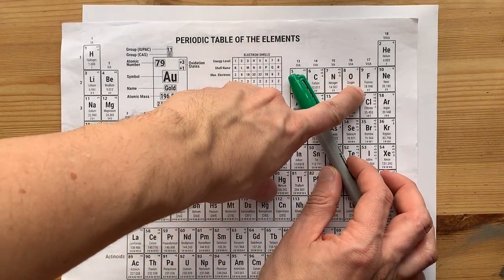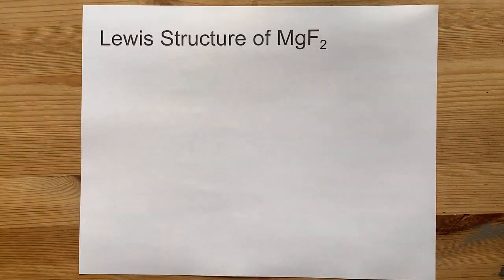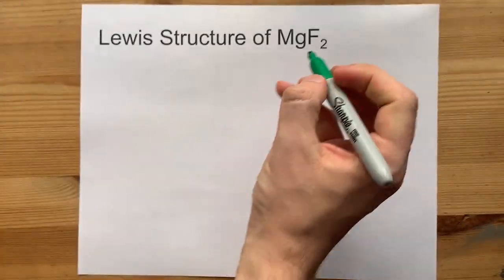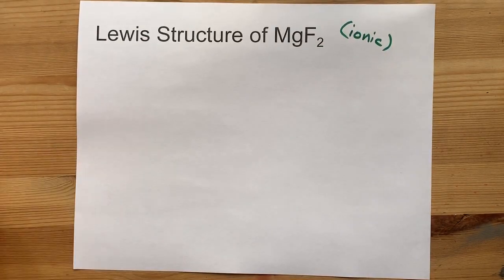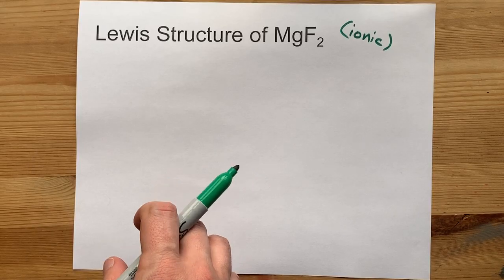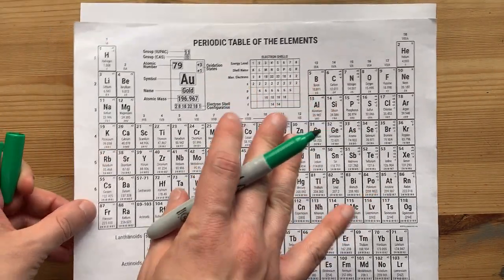Fluorine is a non-metal. It comes from the right-hand side of the periodic table. So when metals and non-metals combine, you get ionic compounds. It means the metals are going to give away their electrons, and the non-metals are going to accept those electrons. Let's see how that happens.